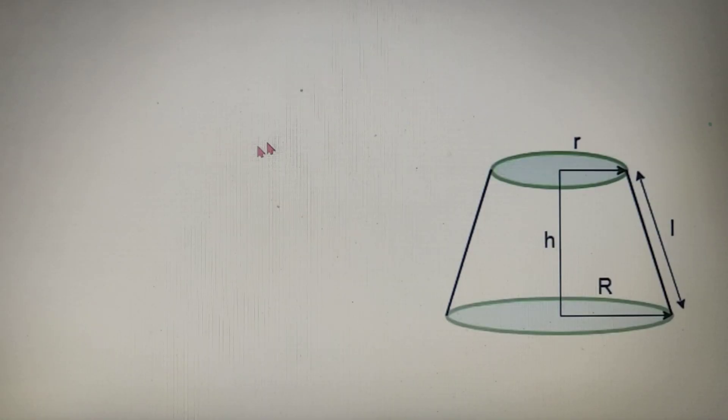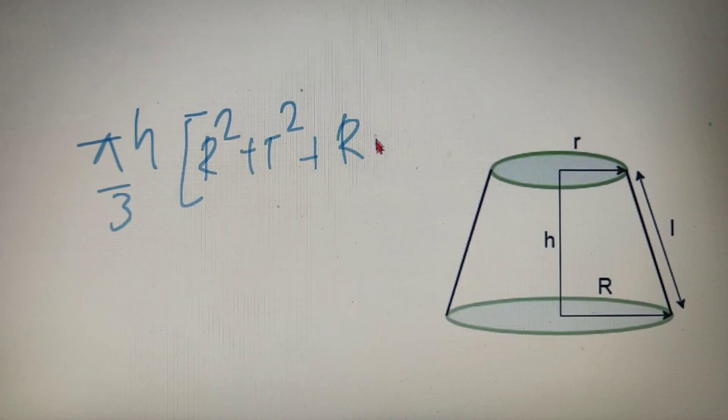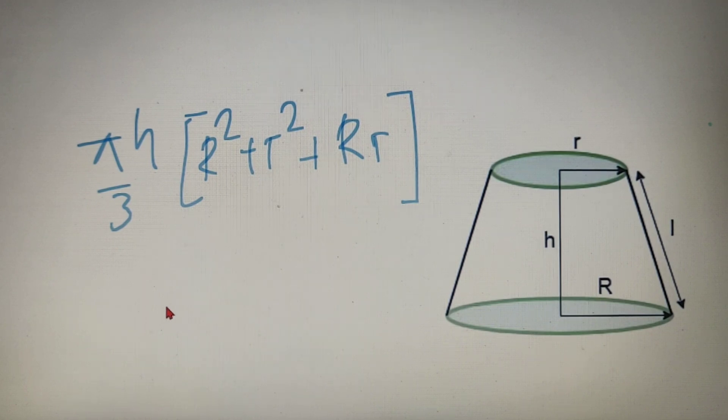Now every three-dimensional figure has an additional property by the virtue of it it can hold some amount of liquid or fluid inside it and the maximum capacity of it is called as the volume of that figure. So since frustum is also a 3D figure it also has some volume and the value of the volume of a frustum is equal to pi h by 3 into capital R square plus small r square plus capital R into small r.